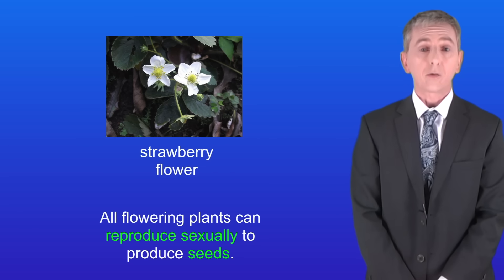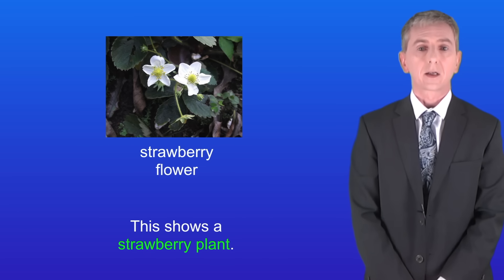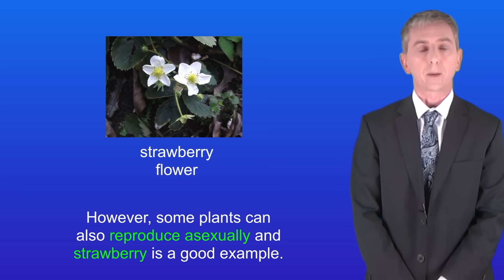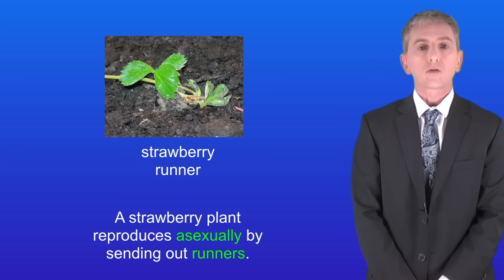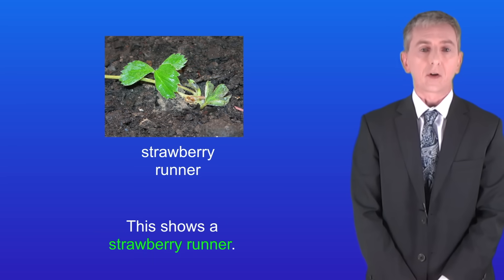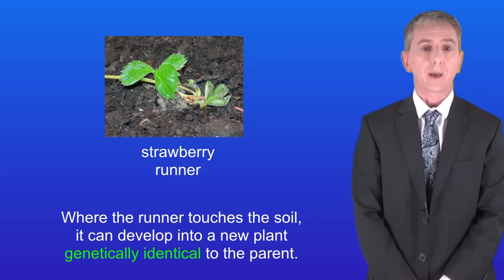All flowering plants can reproduce sexually to produce seeds. I'm showing you here a strawberry plant. However some plants can also reproduce asexually, and strawberry is a good example. A strawberry plant reproduces asexually by sending out runners. Where the runner touches the soil it can develop into a new plant, genetically identical to the parent.